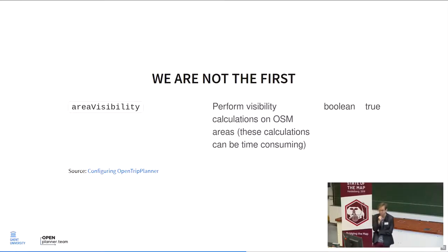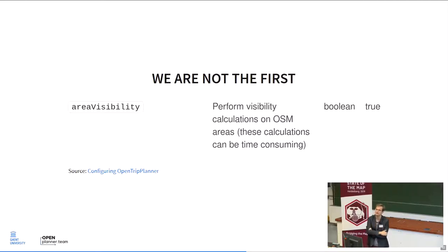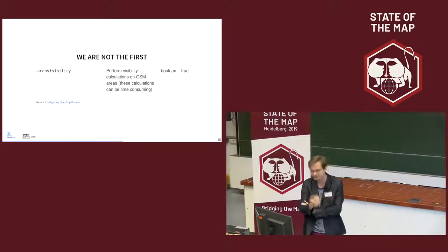An example is OpenTripPlanner, which I think is the only other route planner that does the same thing I just explained — and they do it way better, putting a lot more work into it. But the point is: their configuration page comments say 'these calculations can be time consuming.' So why do we keep repeating the same stuff over and over again? If you can just publish the results of the pre-processing, everyone can just ingest the result and everyone is happier.